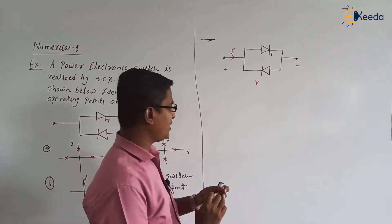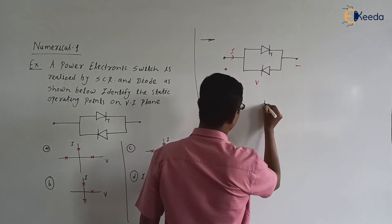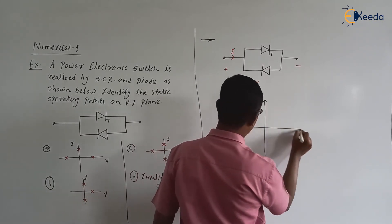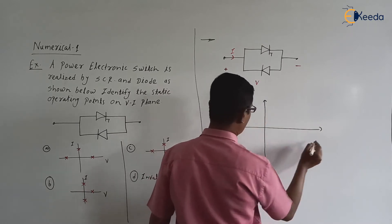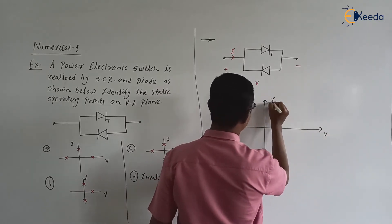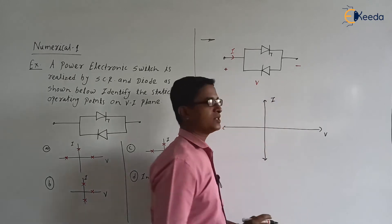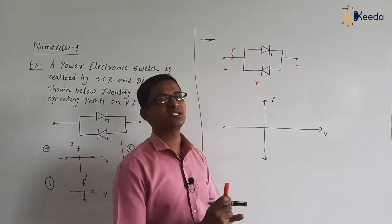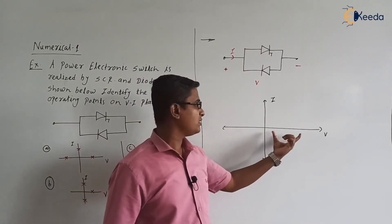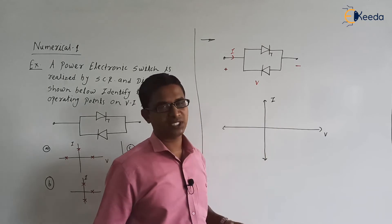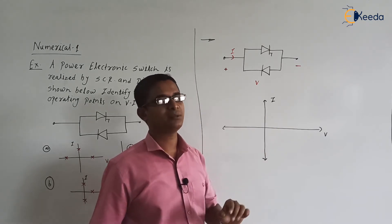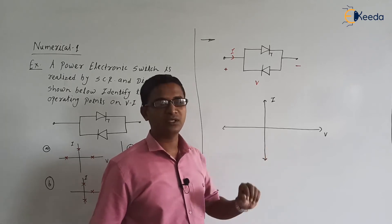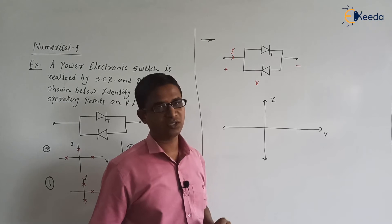So first of all we need to identify whether the switch is blocking the forward voltage or not when it is in the off state. We are considering this as a single switch. We have the types of switches like unipolar, bipolar, and unidirectional and bidirectional. Based on that, we draw or identify the static operating points on the VI plane.